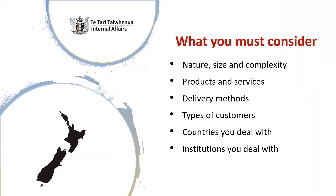Next we'll go over the areas that the Act states that you must consider. These areas are: the nature, size and complexity of your business; the products and services you offer; the way you deliver your products and services; the types of customers you deal with; the countries you deal with; and the institutions you deal with. Please note that the Act also states that your risk assessment must be in writing, must identify the risk based in the ordinary course of business, and must describe how you'll keep your risk assessment current. All these areas are what we will check when we review your documents.